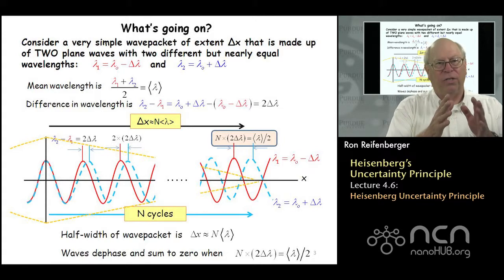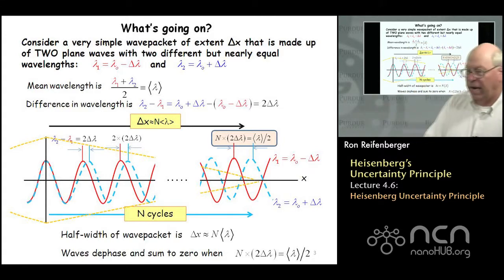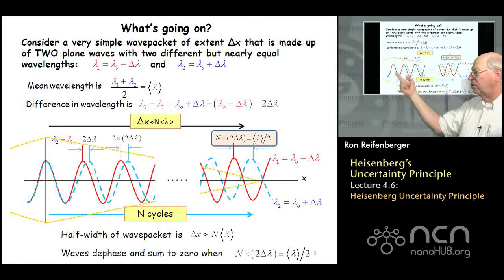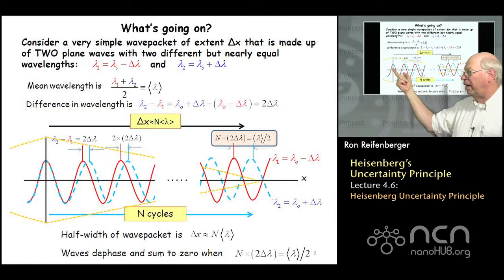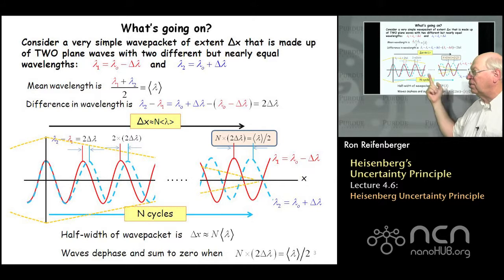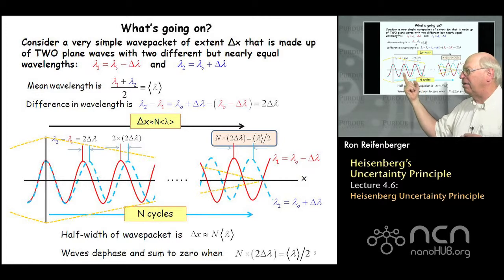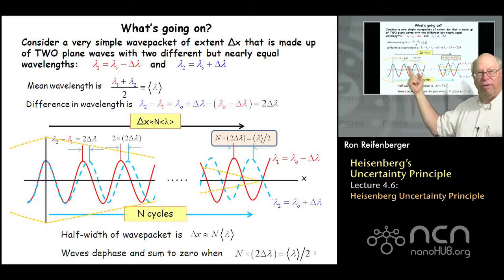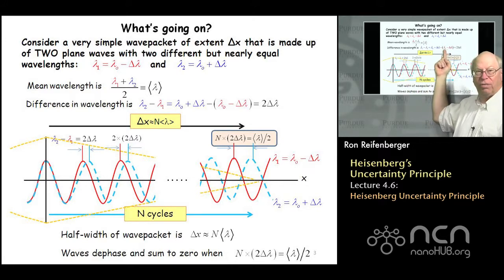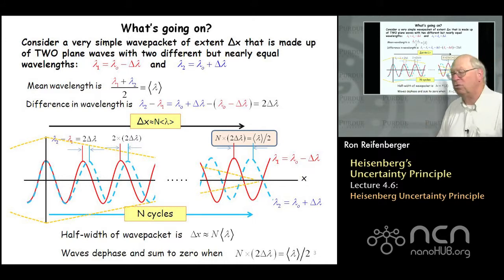What happens when these two waves are in phase at x equal to 0? We synchronize the red and blue waves at x equals 0. As we move down the x axis, the blue wave, since it has a slightly longer wavelength, will tend to run ahead of the red wave. After one complete cycle, the difference between equivalent points on the waves is just lambda 2 minus lambda 1, which is 2 delta lambda.